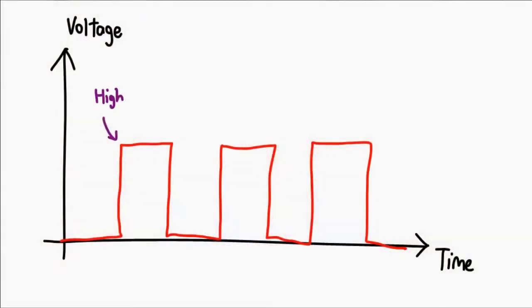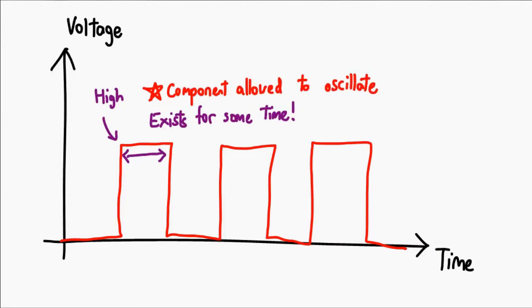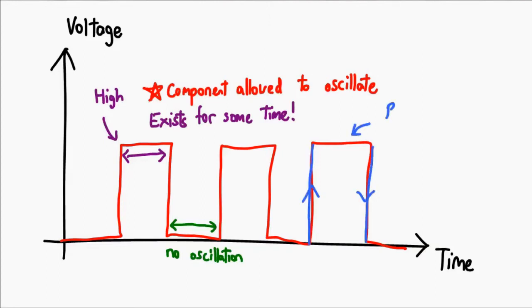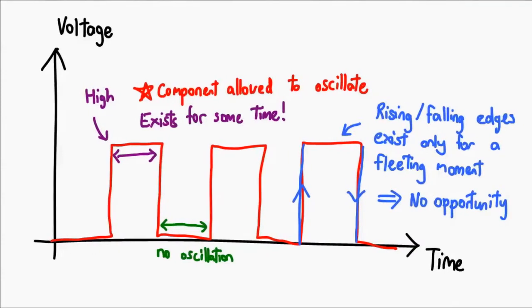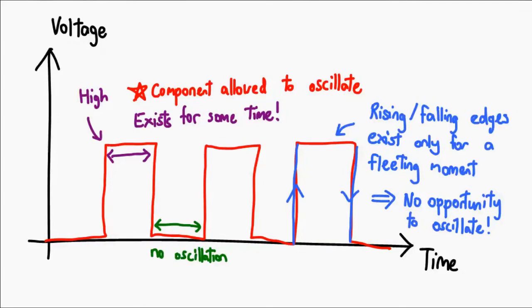Let's also note why we need to use the rising and falling edge, and not a high or a low. This high actually exists for a period of time, so if that were the condition required for your component to advance, then half the time your component is going to oscillate wildly and the other half it's going to stay — which doesn't make a lot of sense. Essentially, we only want it to move forward for a very short period of time and then wait for the rest of the time. That's why we use the rising or falling edge, because the whole advancement only happens at a very quick moment, and then it holds onto that state before moving forward again.